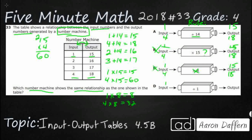Option D is where it's deceptive. If you don't know how input-output works, look what happens if you go down the column: 1 plus 1 makes 2, 2 plus 1 makes 3, 3 plus 1 makes 4. Same with the output: 15 plus 1 makes 16, plus 1 makes 17, plus 1 makes 18. But you have to go side to side — 1 plus 1 equals 2, not 15. And 4 plus 1 equals 5, not 18. So our answer is A.